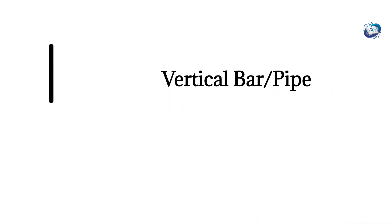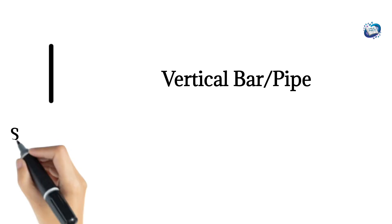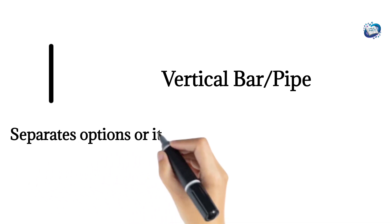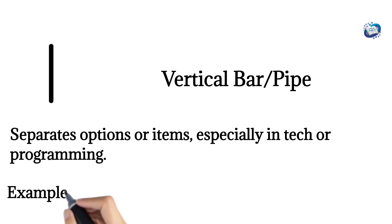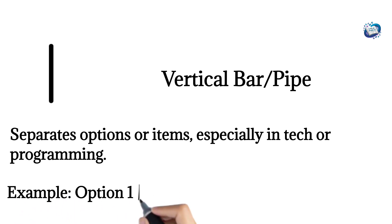Vertical bar, slash, or pipe. Separates options or items, especially in tech or programming. Example: option one | option two.